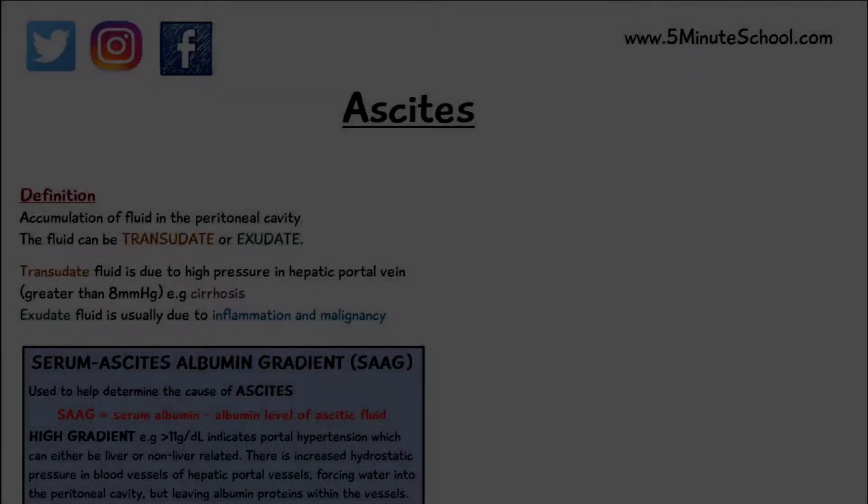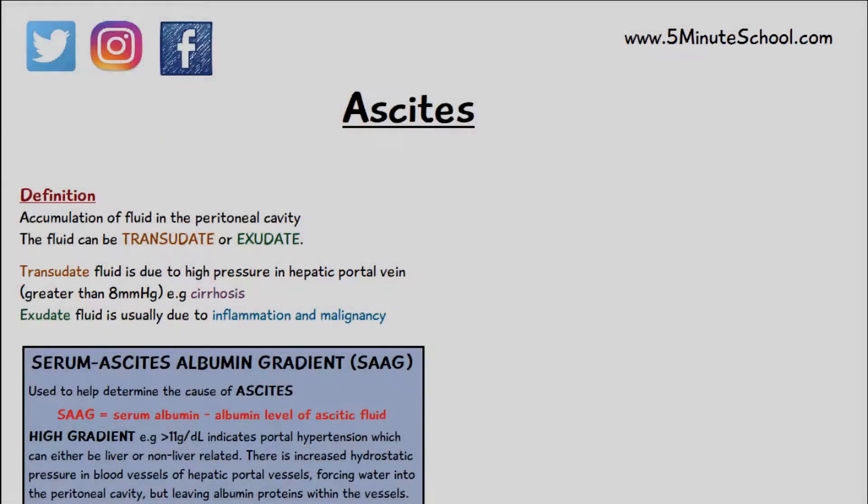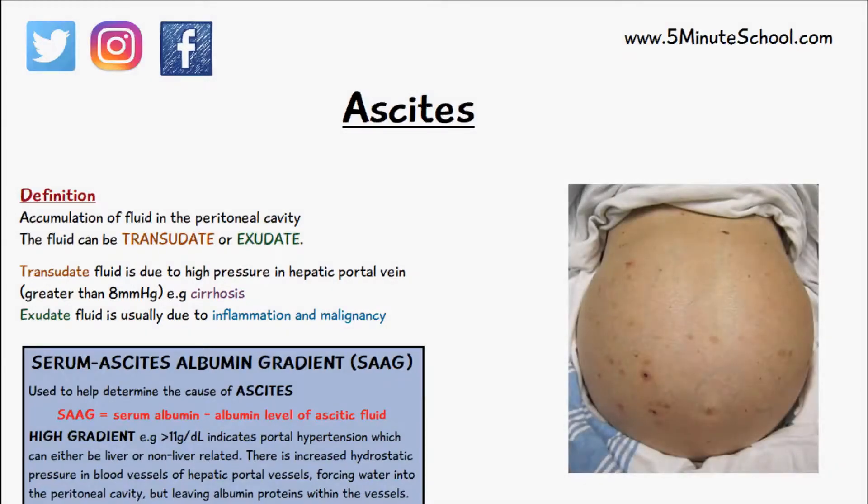The definition of ascites is the accumulation of fluid in the peritoneal or abdominal cavity. The fluid which accumulates can either be transudate or exudate. Transudate basically has less protein and exudate is very protein rich.